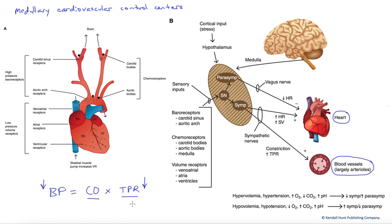Another example would be when we go from a lying to a standing position. This would dramatically affect venous return to the heart — there's a gravitational effect. Venous return would fall, causing cardiac output to fall. If cardiac output fell just due to going from lying to standing, blood pressure would tend to fall. We don't want that to occur because it could compromise blood flow to other tissues, potentially causing someone to pass out due to low blood flow to the brain.